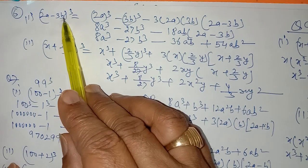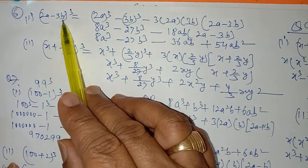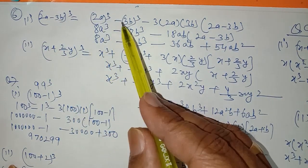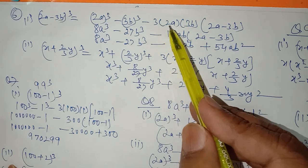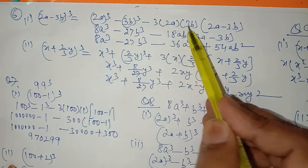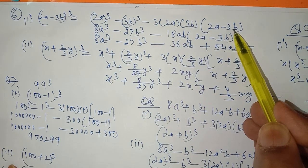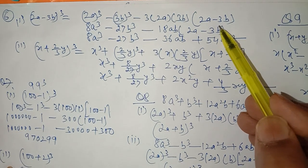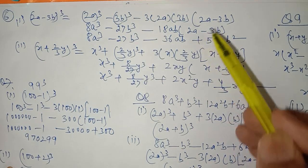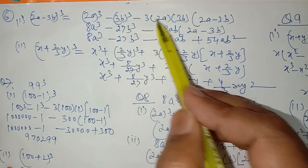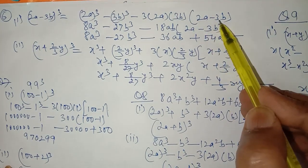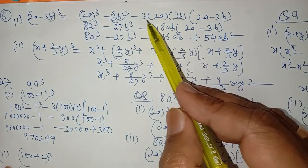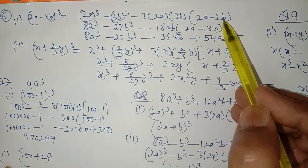You should learn the identity for (a minus b) whole cube: a³ minus b³ minus 3ab(a minus b). So for (2a minus 3b)³, we get 8a³ minus 27b³ minus 18ab in bracket (a minus b). You should learn these identities very well, otherwise it will be difficult for you.